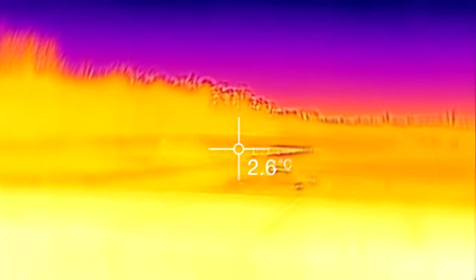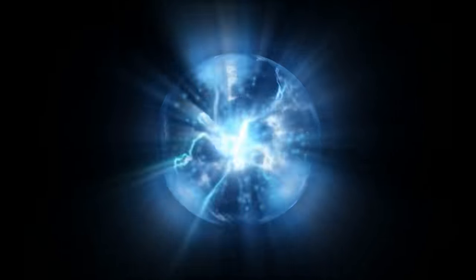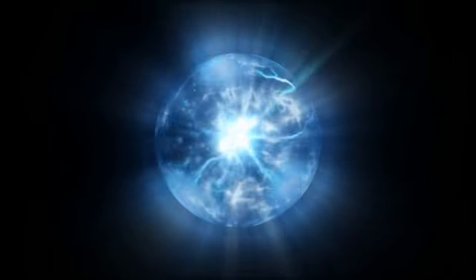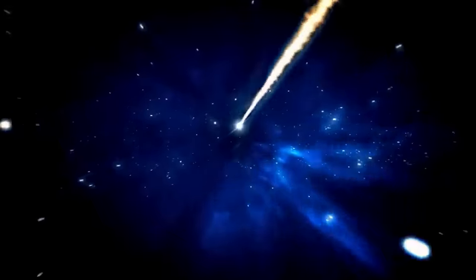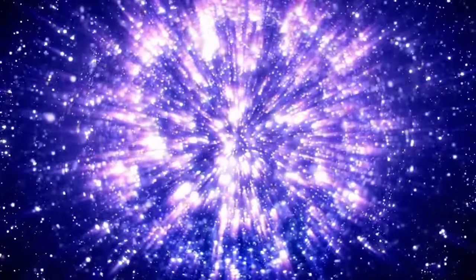However, when we delve into thermal radiation, a fascinating phenomenon unfolds. Upon heating a substance, the atoms within it experience heightened agitation, resulting in the release of photons. Surprisingly, regardless of the substance being heated, the emitted light adheres to the same color spectrum. It's important to note that this colorful display occurs only when there is a congregation of particles. Individual atoms, in isolation, do not exhibit any discernible color through thermal radiation.